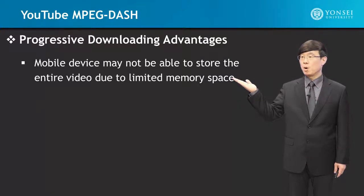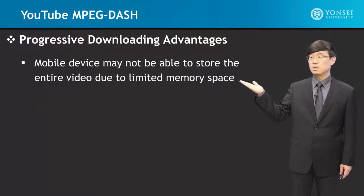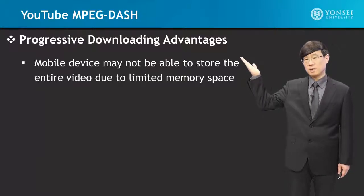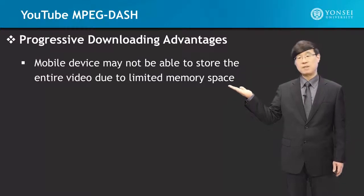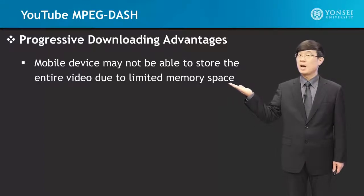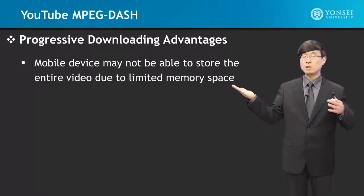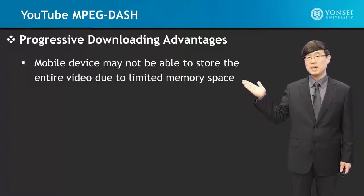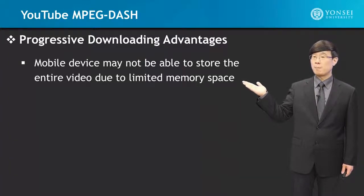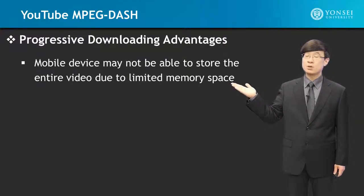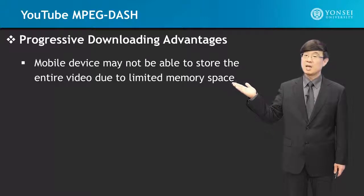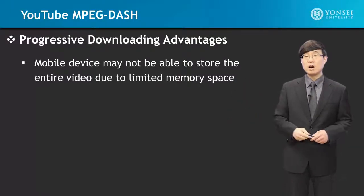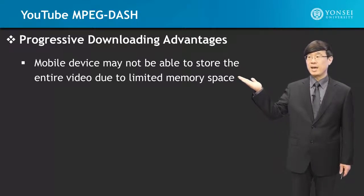Progressive downloading advantages: a mobile device may not be able to store the entire video due to limited memory space. Progressive downloading is beneficial because if you do not have enough space, it prevents you from being blocked from viewing. With progressive download, you download about 2, 10, or maybe 30 seconds worth of video into the buffer for display, and parts already viewed can be erased. So you do not need to save the entire file, which is a real advantage for devices with limited memory, or even when the video file is very large.